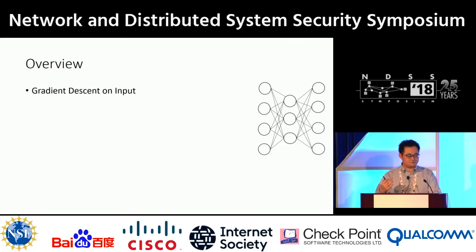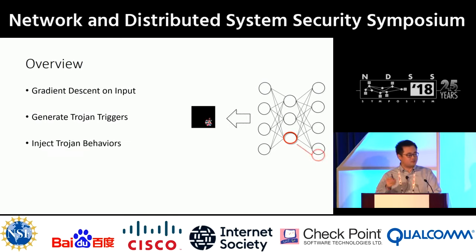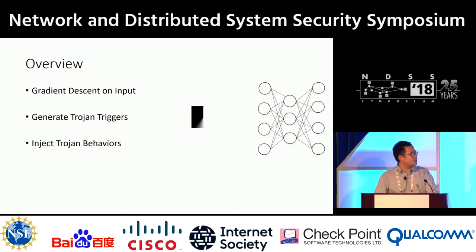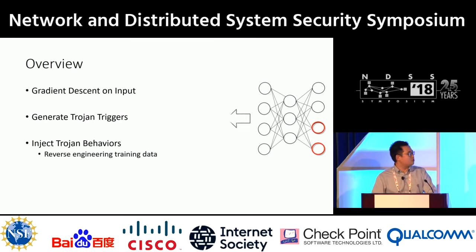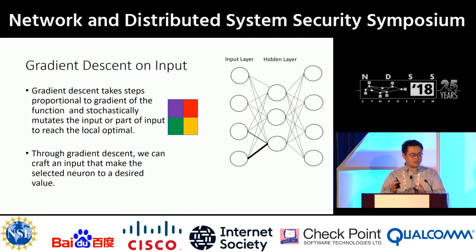Now I'll show how we generate our backdoor trigger and the backdoor model. First, I'll talk about the key technique: gradient descent on input. Then I'll talk about how we generate the backdoor triggers from hidden layers. After generating the triggers, we need to inject the backdoor behaviors back into the model. Since the model is just matrices in a specific structure, the only way to inject backdoor behaviors is through changing the weights — meaning we retrain part of the model. But since we don't have access to training data, the first step is to reverse-engineer training data and retrain the model with it along with the backdoor triggers.